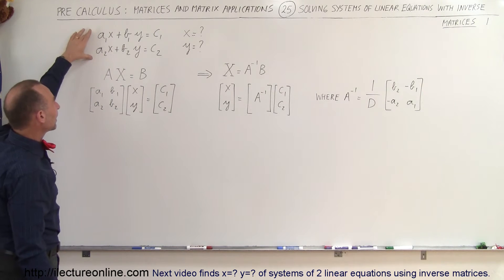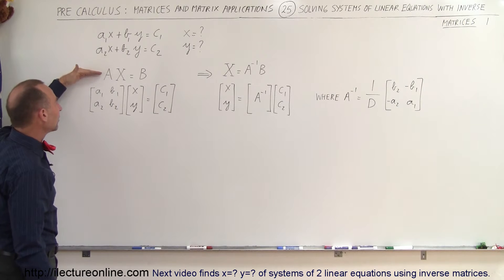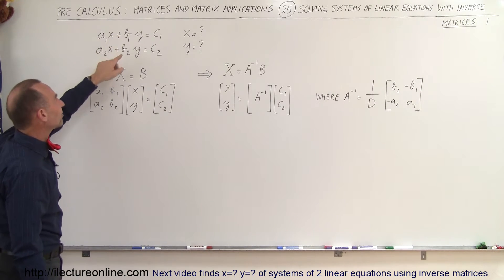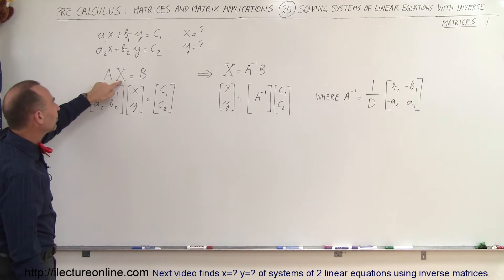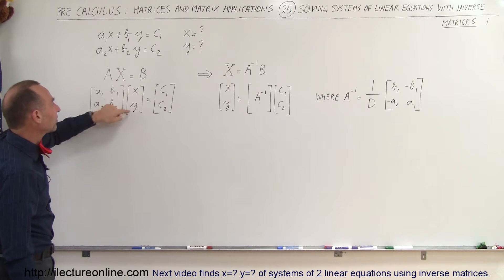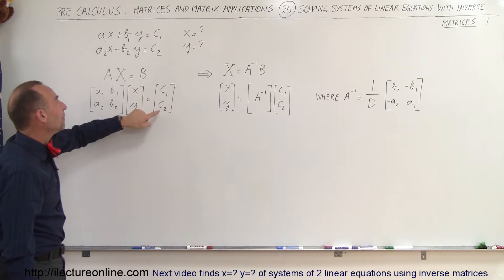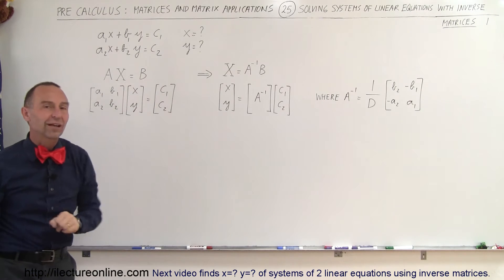We can take a system like this and write it into matrix format. Notice that the A matrix is simply the coefficients of the x and y's in the two equations. x here is simply the matrix of the two unknowns, x and y, and b is the matrix of the constants on the right side of the equation.